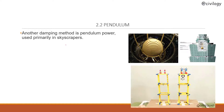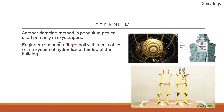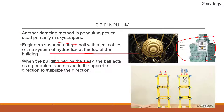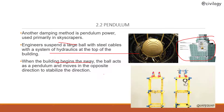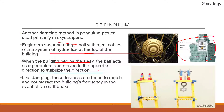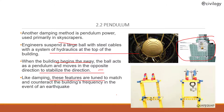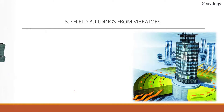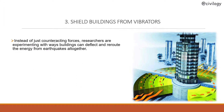Another dampening method is the pendulum damper, used primarily in skyscrapers. Engineers suspend a large ball with steel cables and a system of hydraulics at the top of the building. When the building begins to sway, the ball acts as a pendulum and moves in the opposite direction. Like other damping methods, these features are tuned to match and counteract the building's frequency in the event of an earthquake.